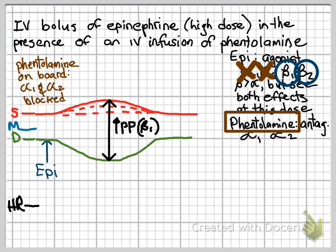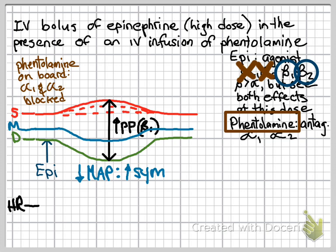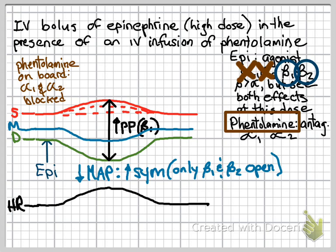Now, we also see changes in our mean arterial pressure. It is going to diminish during this time period, and because the mean arterial pressure decreases, we're going to see a reflex increase in sympathetic activity. Because our alpha receptors are blocked, this sympathetic activity can only act upon the beta-1 and beta-2 adrenoceptors, since they're the only ones that are open. So we only see an effect on the heart rate.